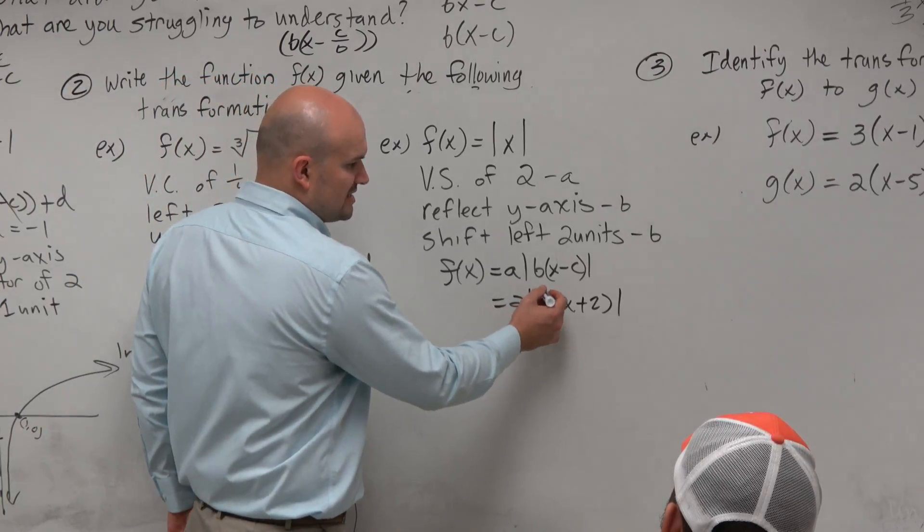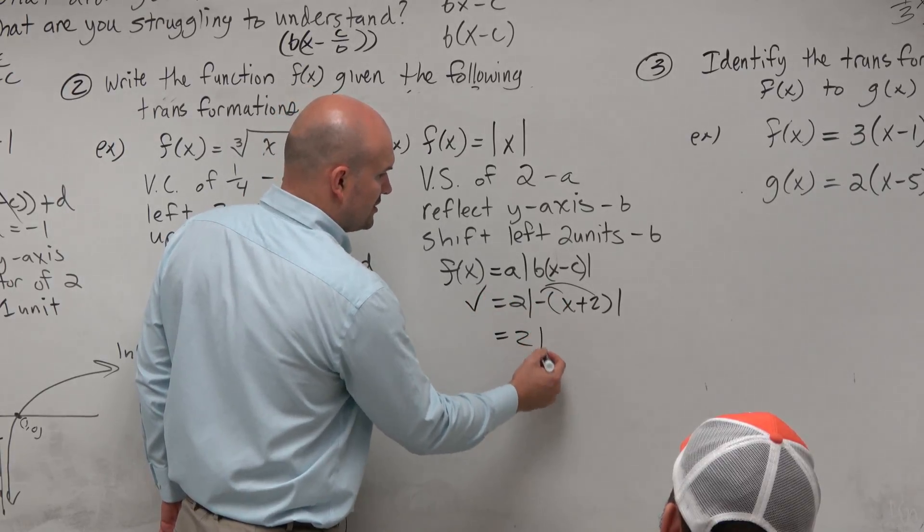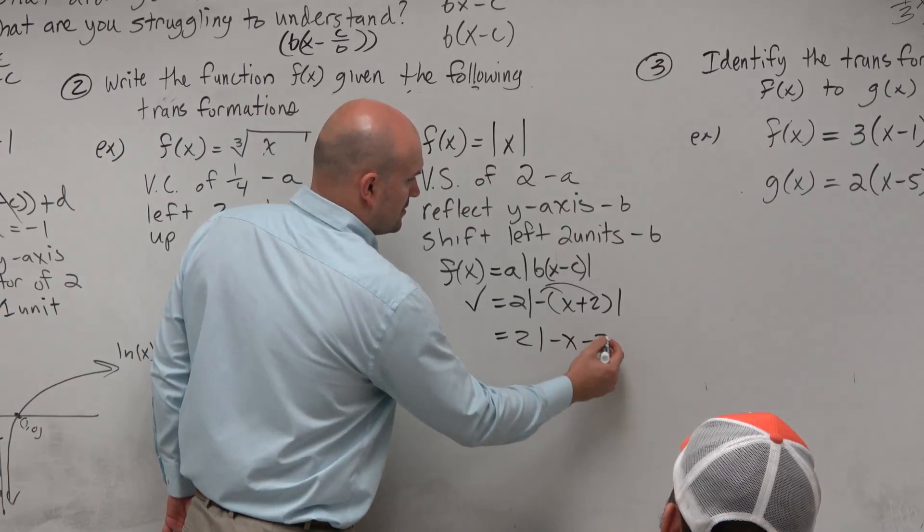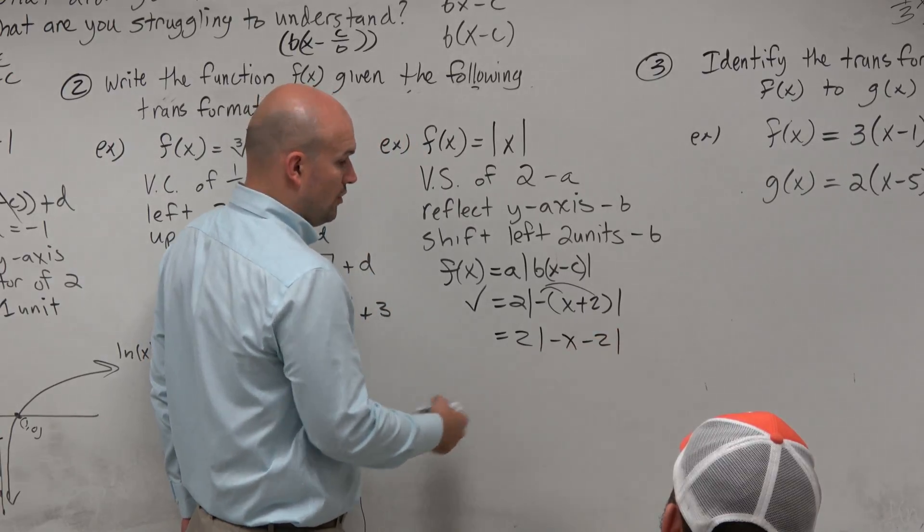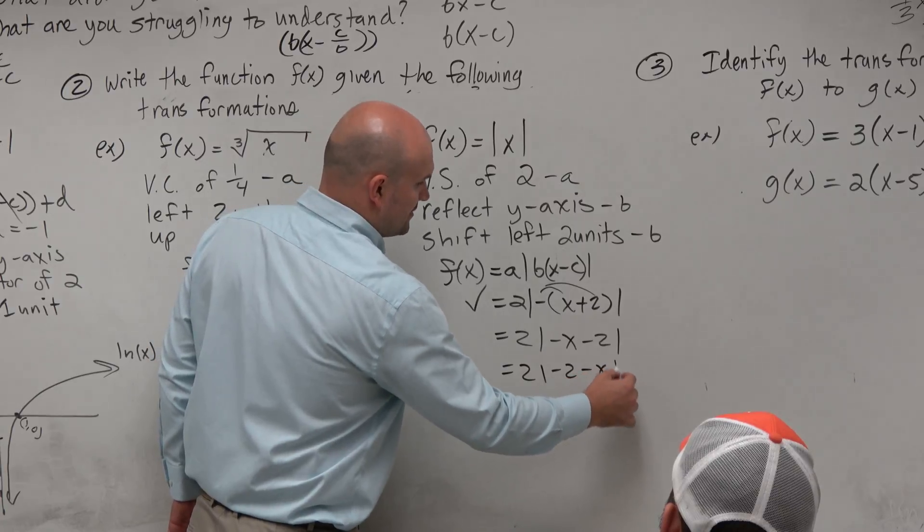So what they would do is they would distribute the negative. And a multiple choice answer, even though that's correct, would look like this. Or they could even have more fun with you and flip things around and make it look like that. All of these are correct.